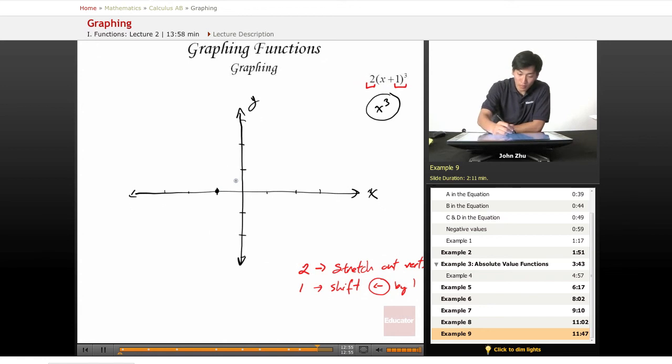Originally, we have a graph that looks something like this. We're going to stretch it by 2, so instead of crossing at (0, 1), it's going to cross at (0, 2). Here we have those two points and our rising cube function.